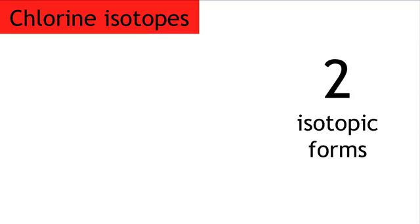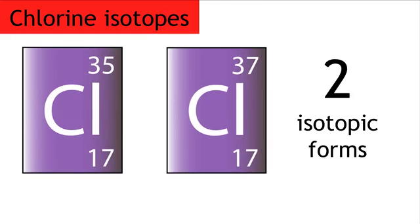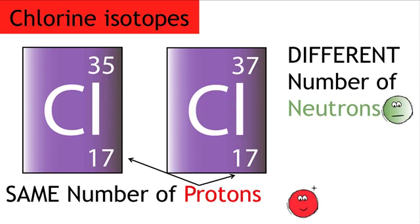There are two isotopic forms of chlorine, chlorine-35 and chlorine-37. Remember, isotopes have the same number of protons but a different number of neutrons.